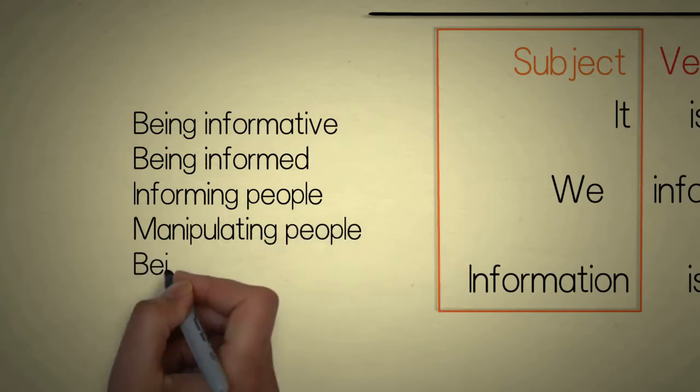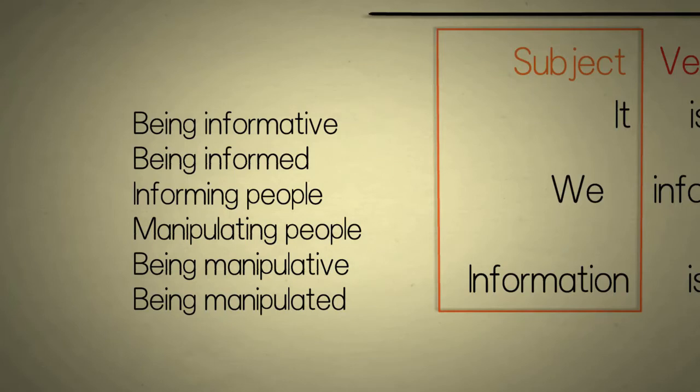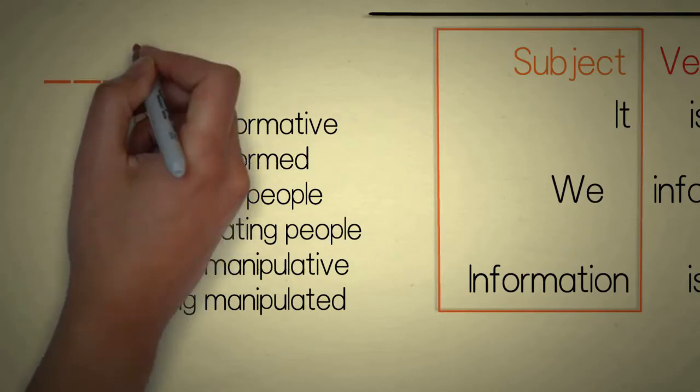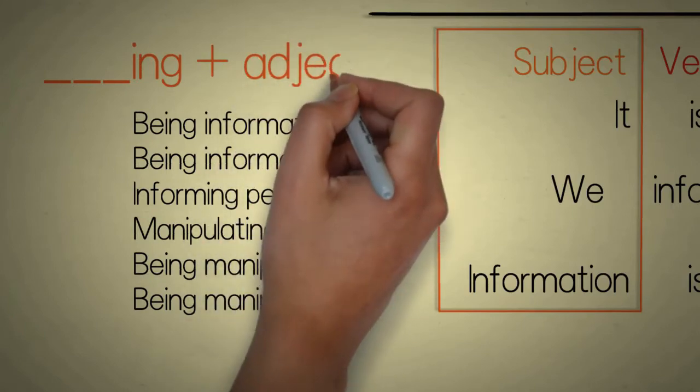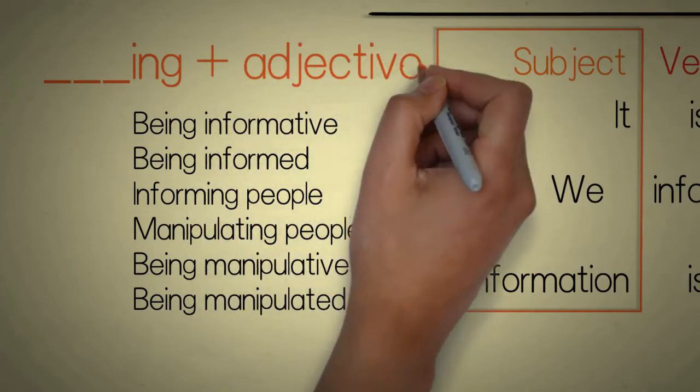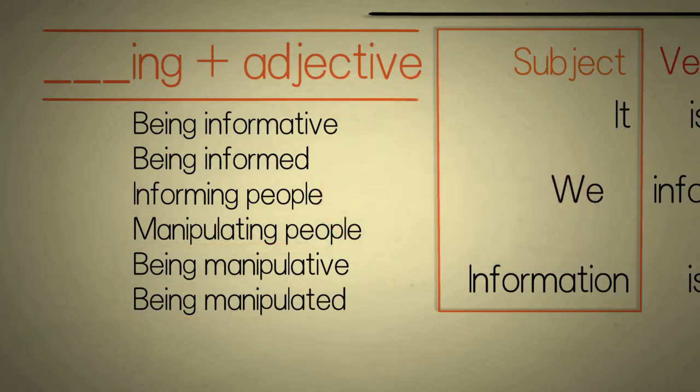That's right, it's -ing plus the adjective, isn't it? This is a common way of starting a sentence or providing the subject of a sentence. Although all these look similar—they've got -ing and the adjective—there are some differences, and those differences are important.